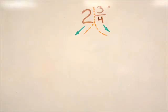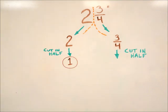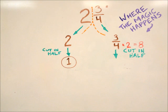First I split up the whole number and the fraction so I can deal with them separately. First I'll find out what half of 2 is, then I'll leave that alone and figure out what half of my fraction is. Anytime we want to know what half of a fraction is, all we have to do is double the number on the bottom.